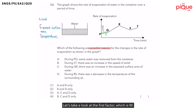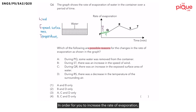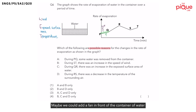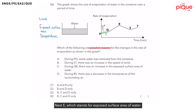Let's take a look at the first factor, W, which stands for wind. In order to increase the rate of evaporation, would you want the speed of wind to increase or decrease? You would want the speed of wind to increase. What can be done to increase the speed of wind? Maybe we could add a fan in front of the container of water, or increase the speed of any existing fans.